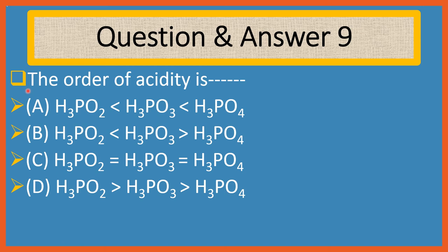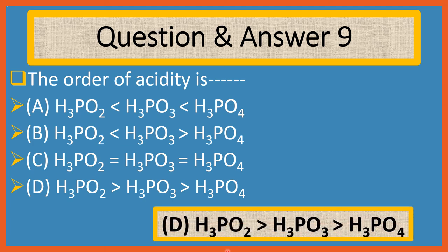Question 9. The order of acidity is. Choices are: A. H3PO2 less than H3PO3 less than H3PO4, B. H3PO2 less than H3PO3 greater than H3PO4, C. H3PO2 equals H3PO3 equals H3PO4, D. H3PO2 greater than H3PO3 greater than H3PO4. Answer is D: H3PO2 greater than H3PO3 greater than H3PO4.